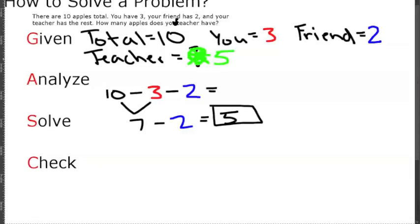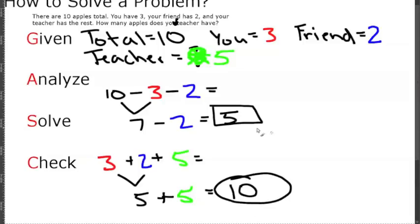We're going to do 3 plus how many your friend has plus how many your teacher has, and see what that equals. 3 plus 2 is 5. 5 plus 5 equals 10. Yes, it checks. There were 10 apples total, and we got that there are a total of 10 apples when we add everyone up.